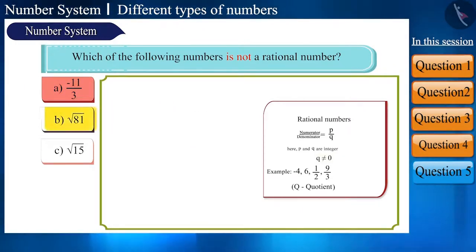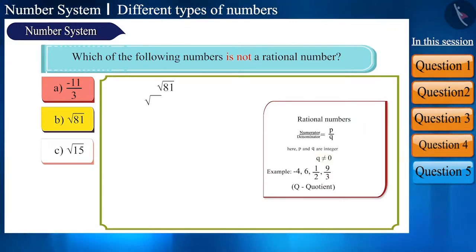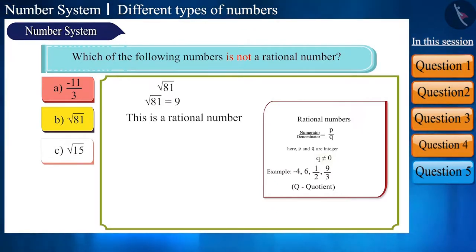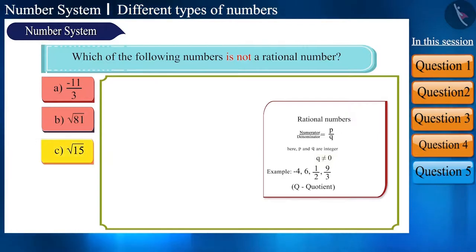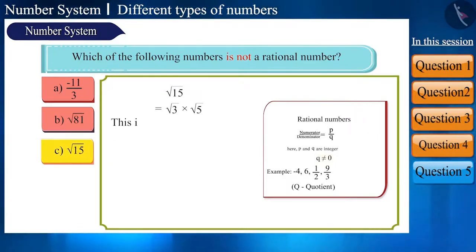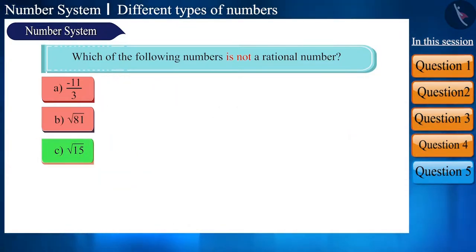The second option is √81. The square root of 81 is 9, which is a rational number. The third option is also a square root — √15 — and the square root of 15 is an irrational number.